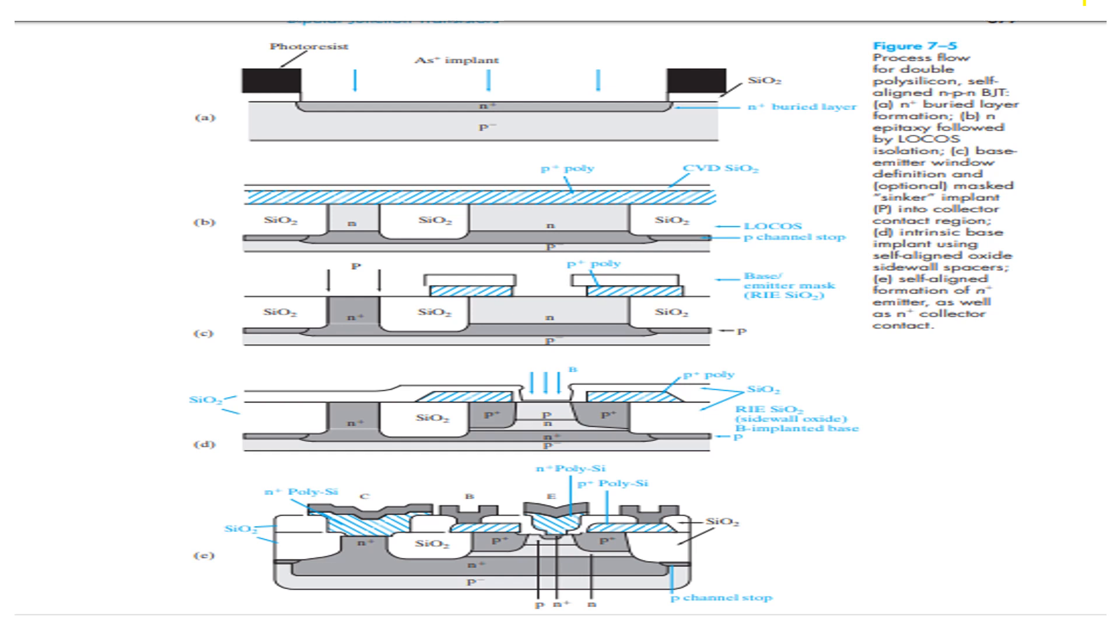Now, this is our figure number 7.5 which shows the double polycrystalline self-aligned NPN-BJT and its process is same as we have discussed earlier except this is our double polysilicon self-aligned NPN-BJT. In this BJT as shown in A, basically, first of all, P-type substrate is taken and a heavily N-type buried layer is formed by using arsenic or antimony and then on its top there is an epitaxy followed by the isolation produced.